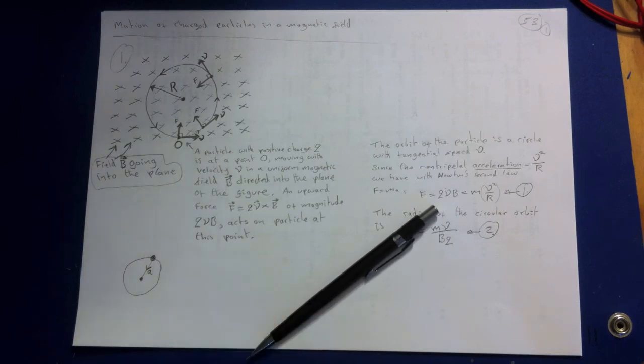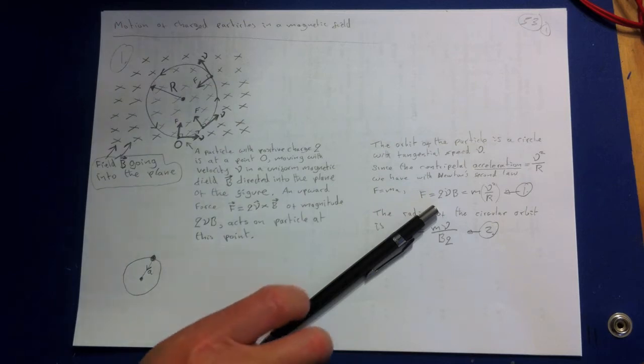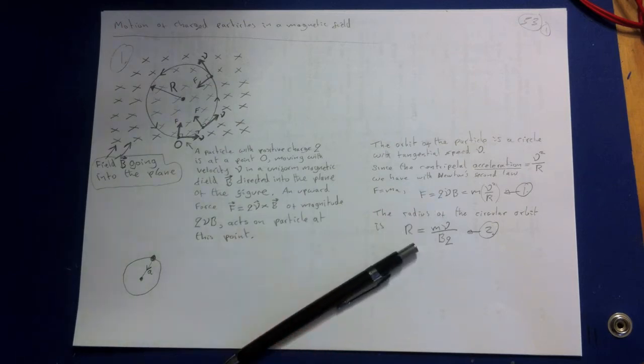Where M is the mass of the particle, the radius of the circular orbit then is R equals MV over BQ. So that's the radius of the circular orbit.